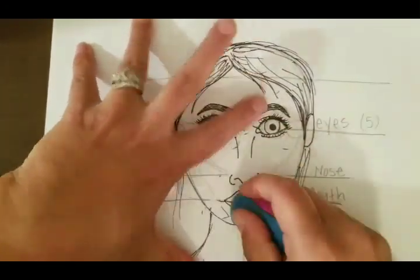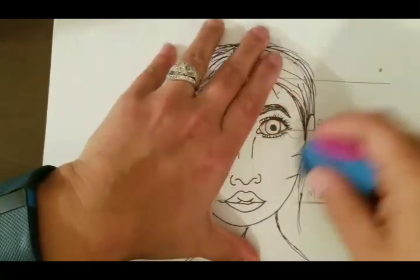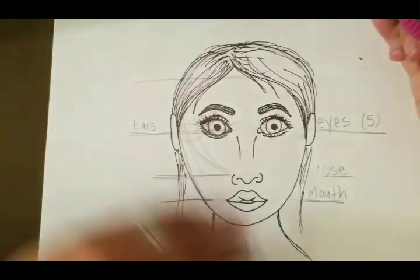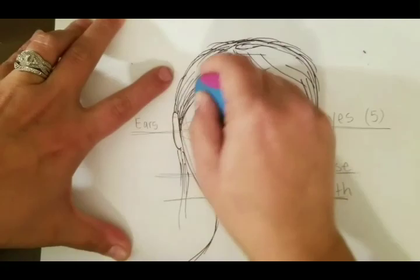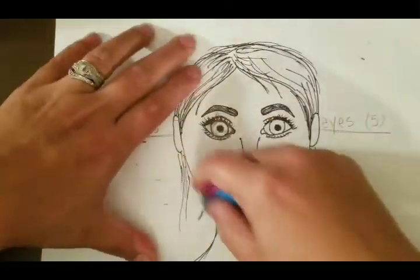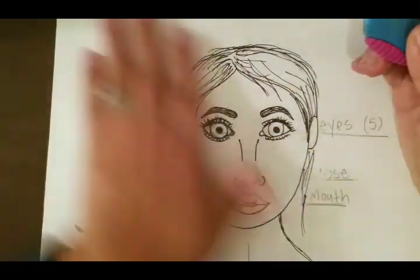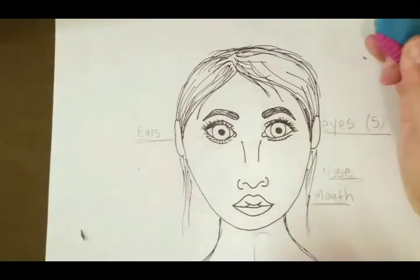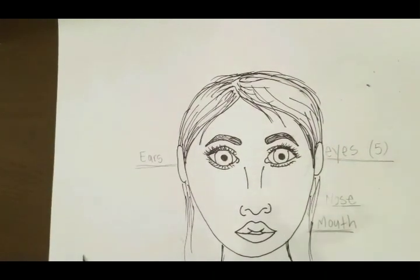I went ahead and erased all of my pencil markings. When you're erasing, just be careful that you don't erase too quickly, too fast, you're not rushing it. If you rush it, then you might end up actually ripping or folding your paper. You don't want to do that, you don't want to risk it.